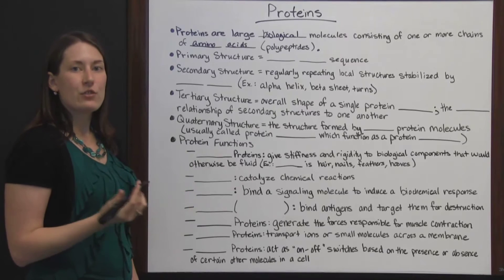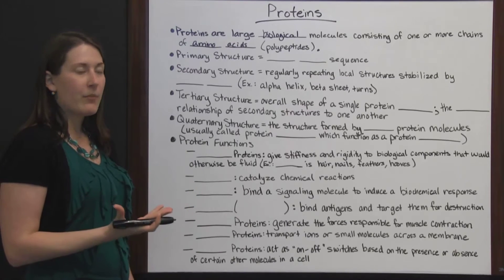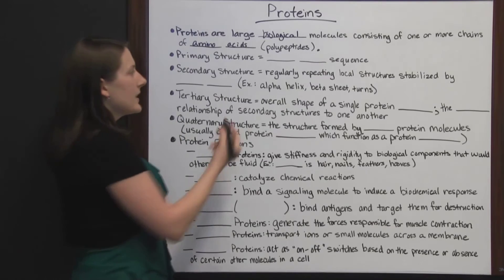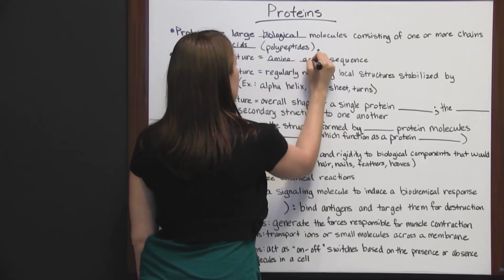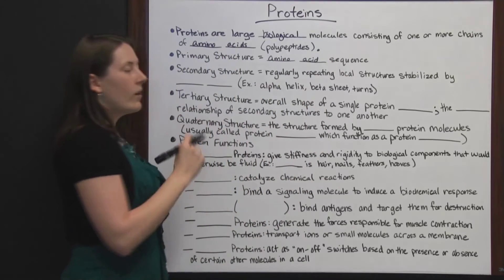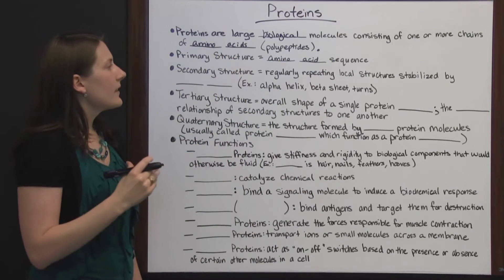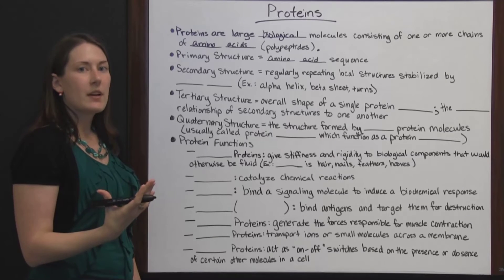Proteins have different structures based on how many of them are present. The primary structure of a protein is its amino acid sequence, so just the one chain, the one polypeptide chain, and what sequence those amino acids are taking.